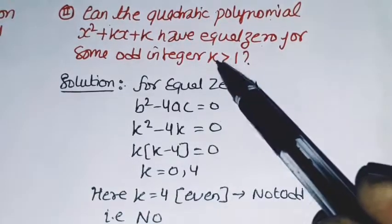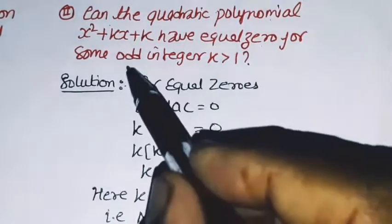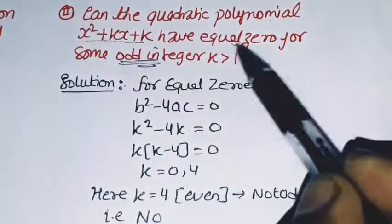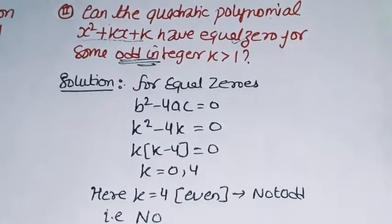When the value of k is greater than 1 and also odd, will this given function give equal zeros? Equal zeros means the value of x will be equal, like 2,2 or 3,3 or -1,-1. We learned in the quadratic equations chapter...